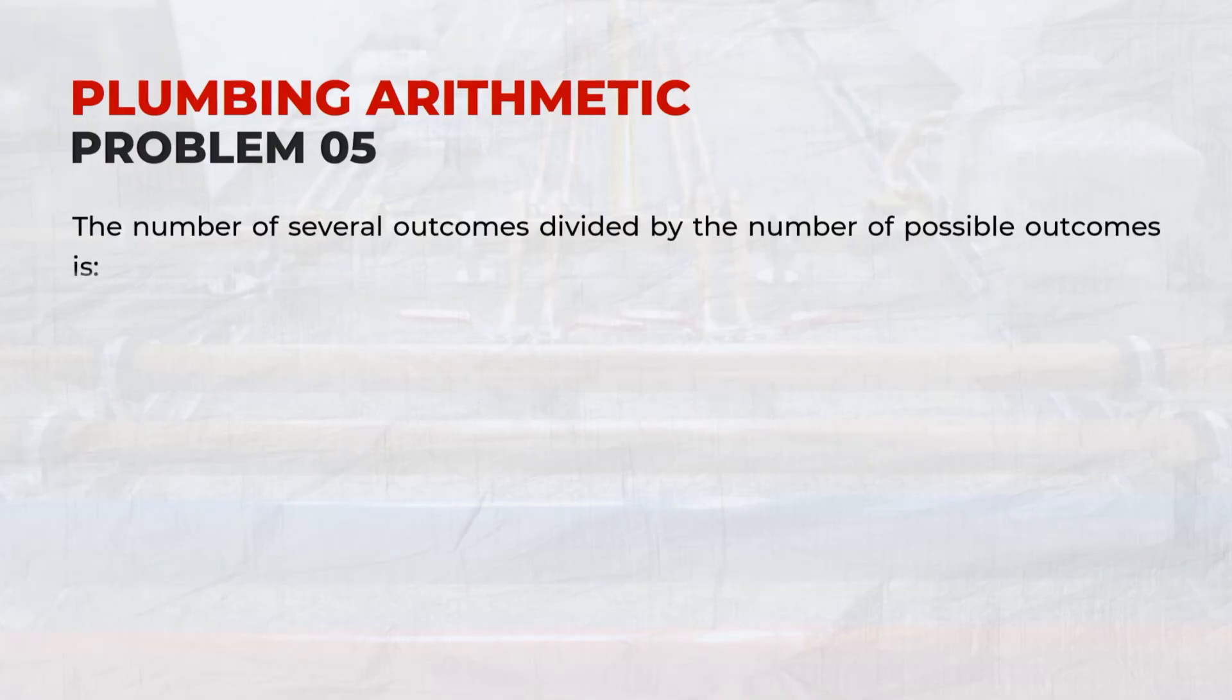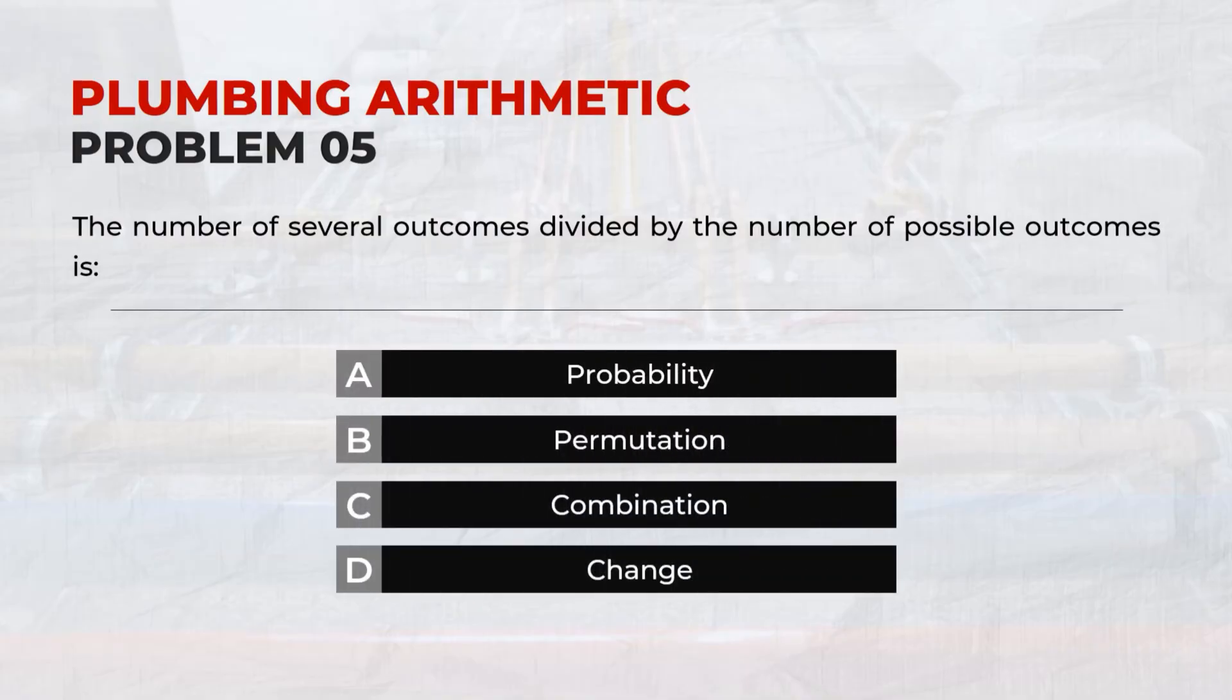Problem 05: The number of several outcomes divided by the number of possible outcomes is? Answer: A, Probability.